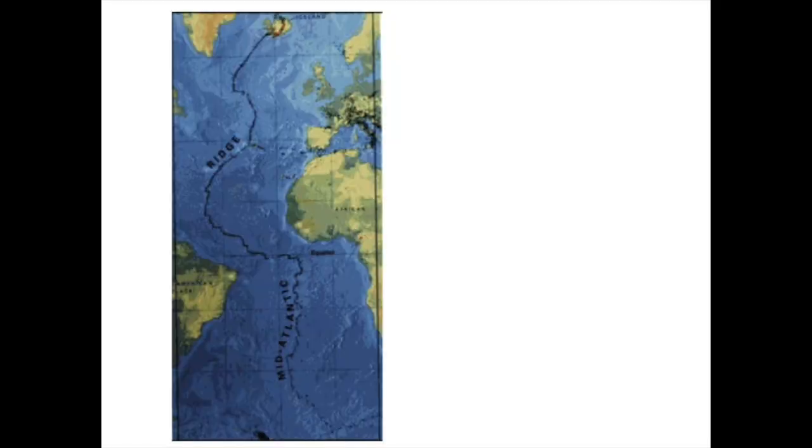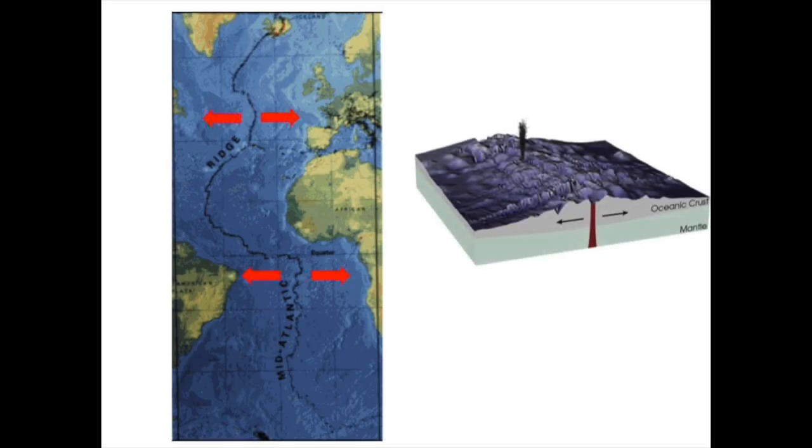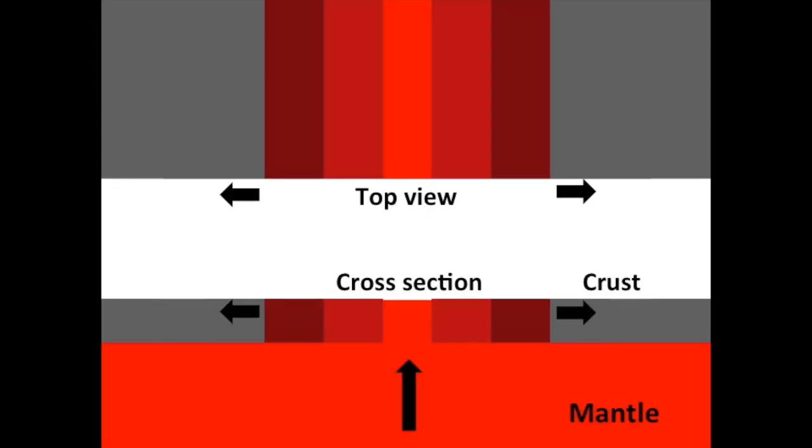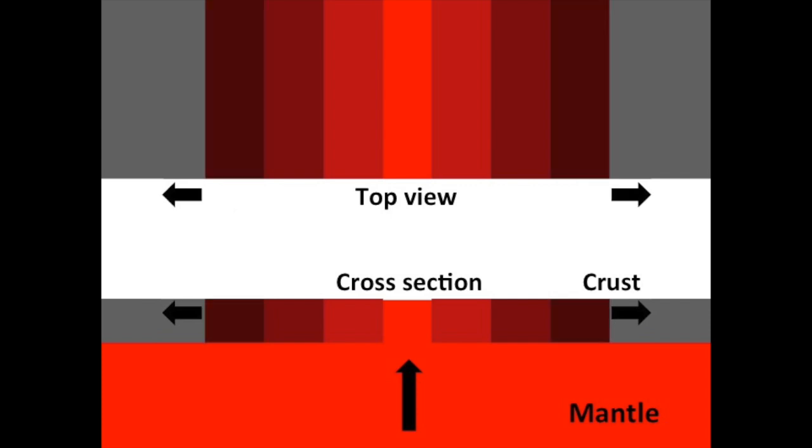All of Earth's past magnetic field orientations are imprinted in the Earth's crust. On the seafloor, new crust is formed at mid-ocean ridges where two tectonic plates pull apart and lava wells up between them.